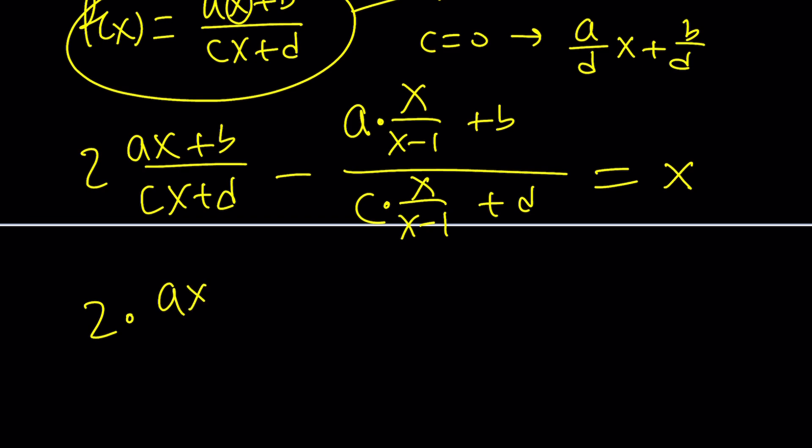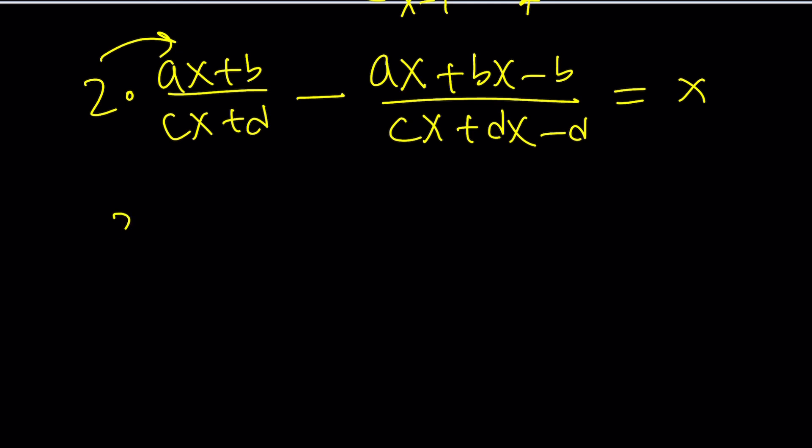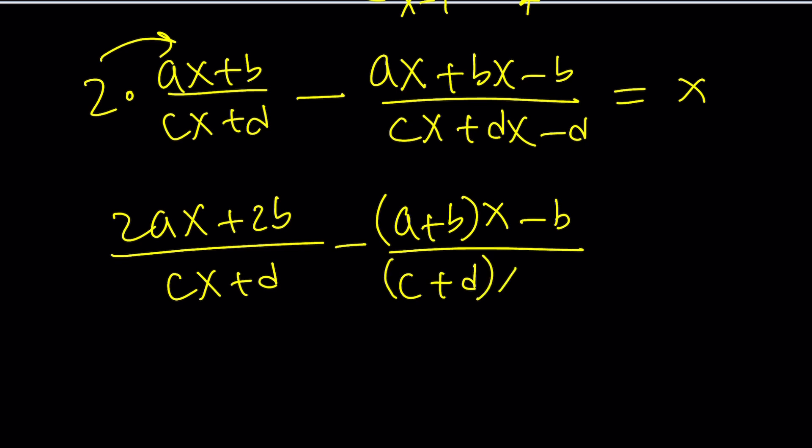2 times ax plus b over cx plus d. By the way you can distribute the two if you want. Here we're going to get ax plus bx minus b divided by cx plus dx minus d by making a common denominator and this is going to equal x. Awesome. What do you do next? We can go ahead and distribute. Here we can kind of put these together. The coefficient of x is a plus b and then negative b is a constant and in the denominator we have c plus d as the coefficient of x minus d. All right and this is x.